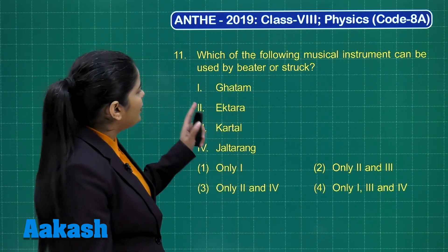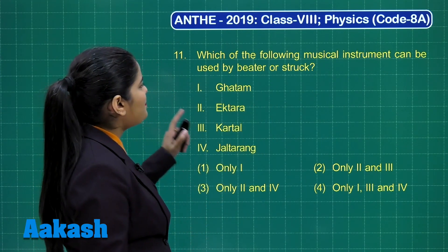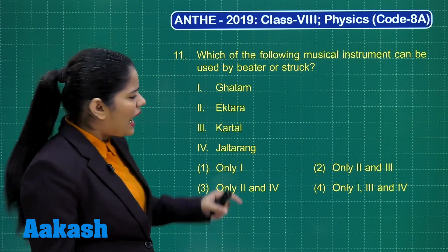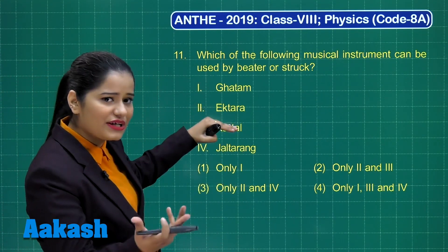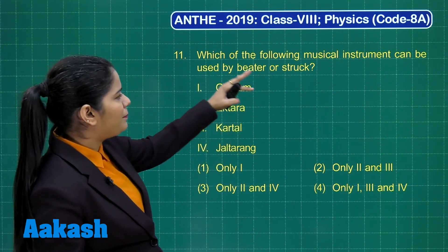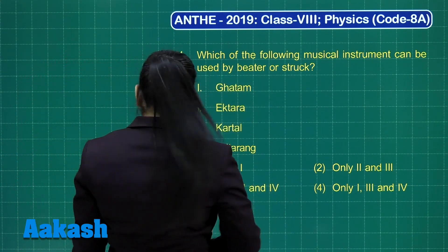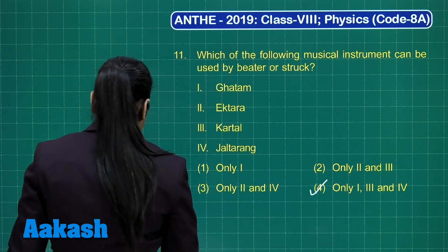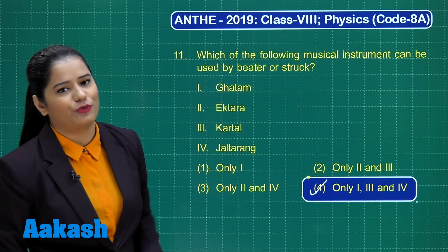Question 11 asks which of the following musical instruments can be used by beater or struck. Out of the four given instruments, except ek tara — which is a string instrument — the others can be used by beater or struck. So the correct option is option number 4.